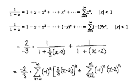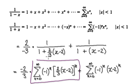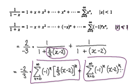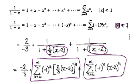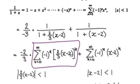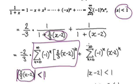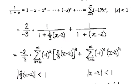Now if you look at this series, this series is valid when the absolute value of our bubble is strictly less than 1. And then this series is valid for when our bubble here is strictly less than 1. So this series is only valid for the absolute value of that thing there being less than 1. And then this series is only valid for when the absolute value of that thing is less than 1.